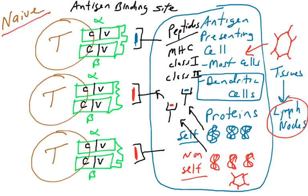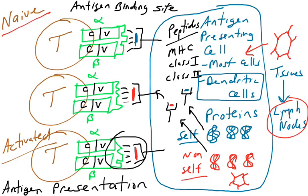This process is known as antigen presentation. We're going to have to talk a lot about how cells get these antigens and present them to T cells. Once they do, T cells will check to see if they match these peptides. If a T cell matches a peptide, it becomes activated.